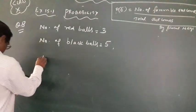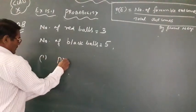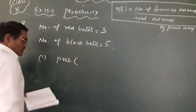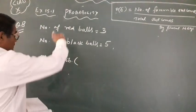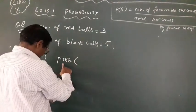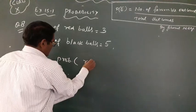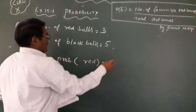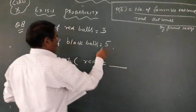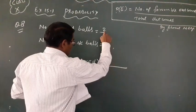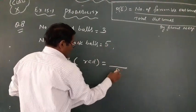So first part, probability of, you can write probability in short form because this is the long word. So probability of a red ball. Red. So total outcome. Total outcome. 3 plus 5 equals 8.